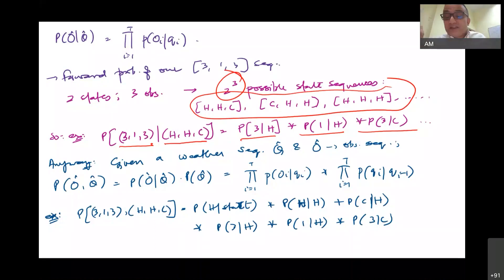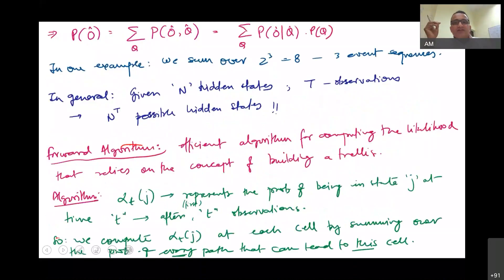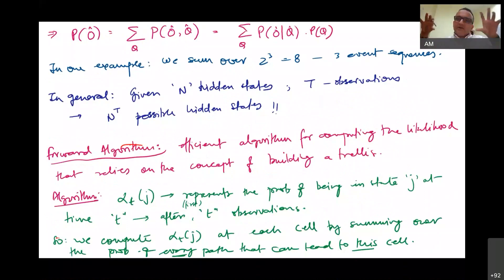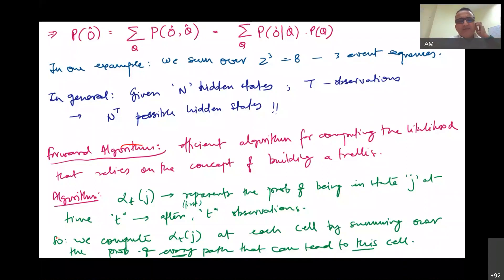There has to be a better way, and that better way is a recursive process called the forward algorithm. It requires building a trellis: you start with the initial state and then recursively compute the probability of observing partial sequences, building up from the beginning to the end of the full sequence.